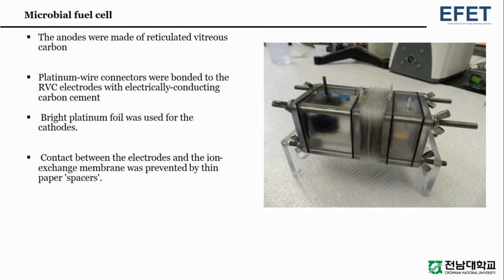The anodes were made of reticulated vitreous carbon. Platinum wire connectors were bonded to the RVC electrodes with electrically conducting carbon cement. Bright platinum foil was used for the cathodes. Contact between the electrodes and the ion exchange membrane was prevented by thin paper spacers.